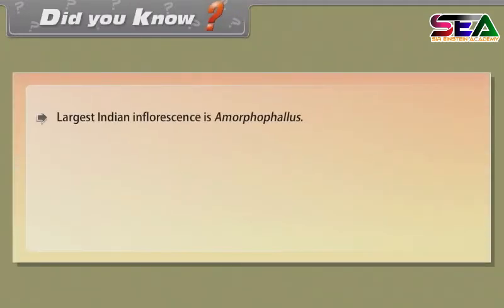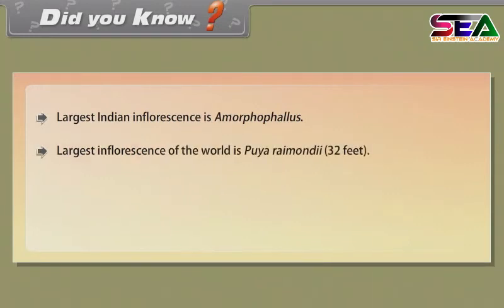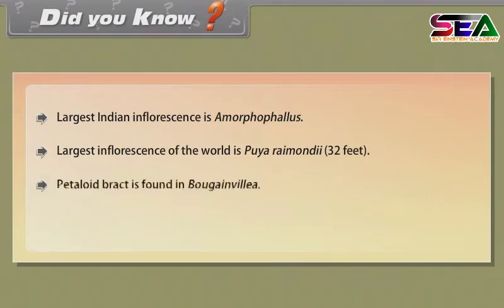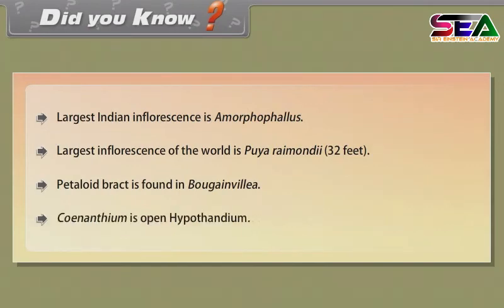Did you know: the largest Indian inflorescence is Amorphophallus. The largest inflorescence in the world is Puya raimondii at 32 feet. Petaloid bract is found in Bougainvillea. Synanthium is an open hypanthodium.